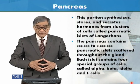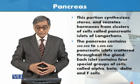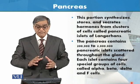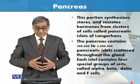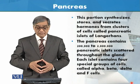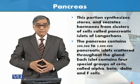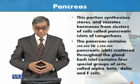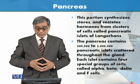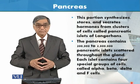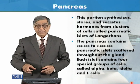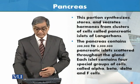This portion synthesizes, stores, and secretes hormones from a cluster of cells called pancreatic islets of Langerhans. The pancreas contains about 200,000 to 2 million pancreatic islets scattered throughout the gland. Each islet contains 4 special groups of cells: alpha cells, beta cells, delta cells, and F cells.